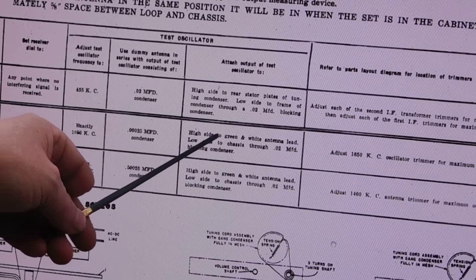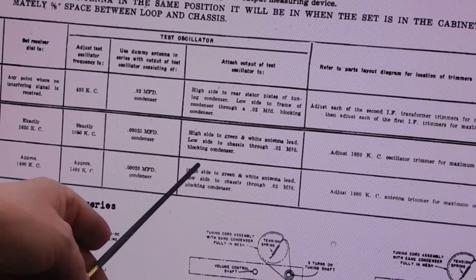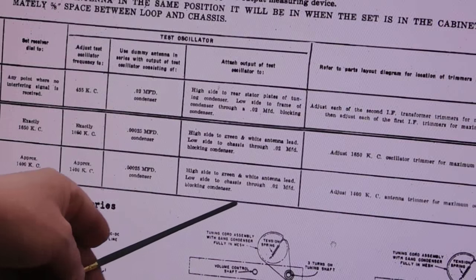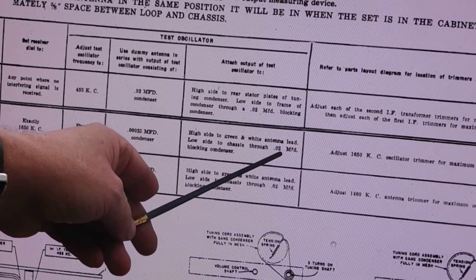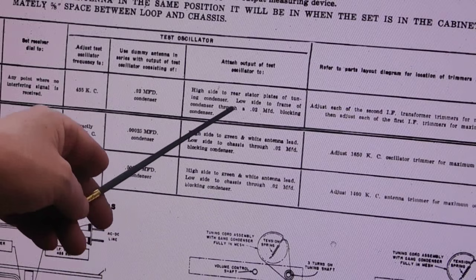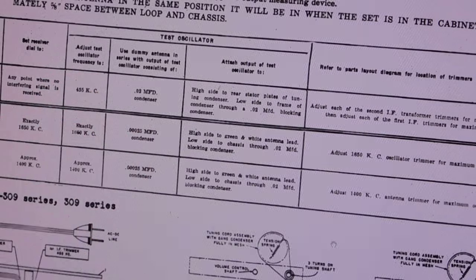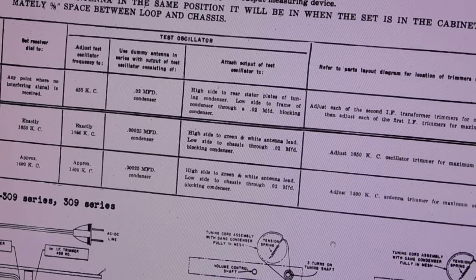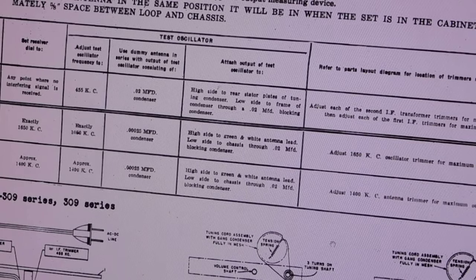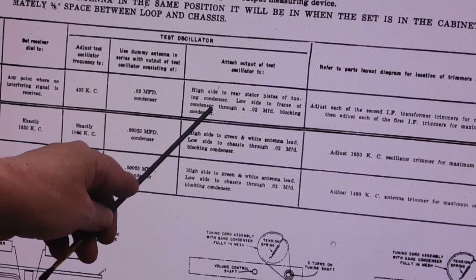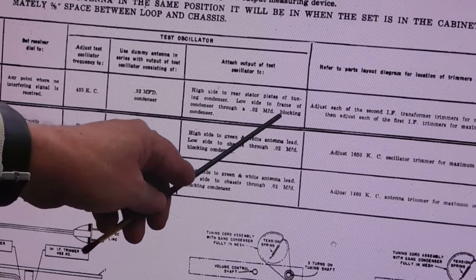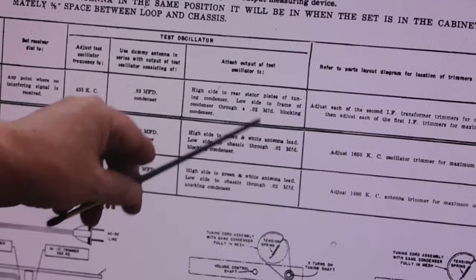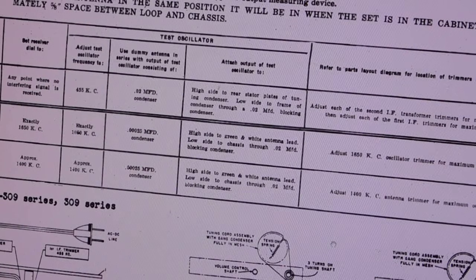But since we're higher frequency, we're running at 250 picofarad. That's what the 0.00025 microfarad is - 250 picofarad. In this case, they want you to hook it at the antenna lead coming from the loop antenna through a 0.02 blocking capacitor.